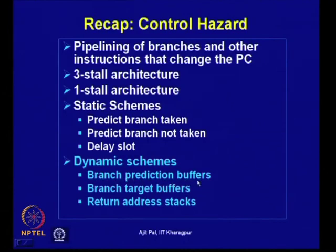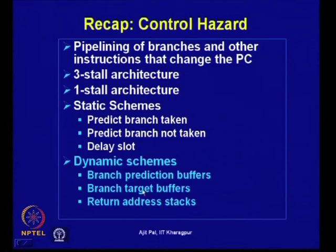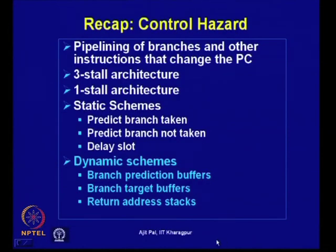Branch prediction buffers will hold information about whether a branch will be predicted taken or untaken. Branch target buffers will hold information about the target address — normally computed during instruction execution, but with prediction the branch target buffer can be stored in cache memory and used for generating the target address. Return address stacks can also be used, where return instruction addresses are stored in a stack. With all these dynamic schemes, processor performance can be significantly improved.